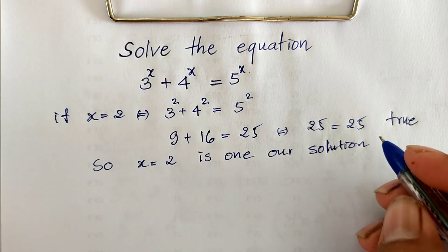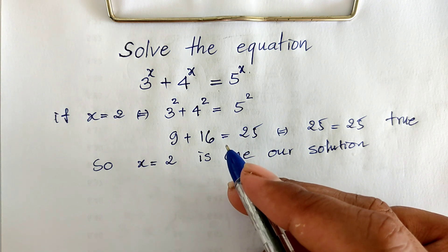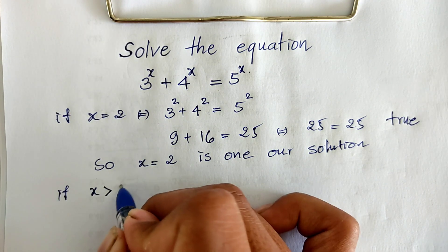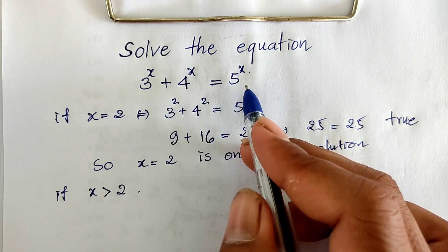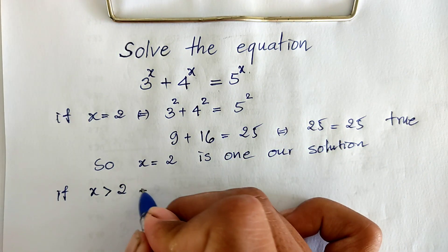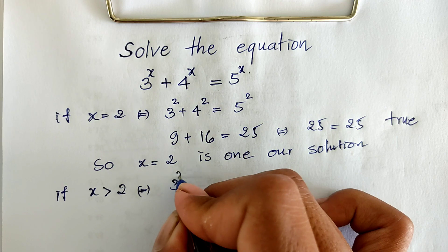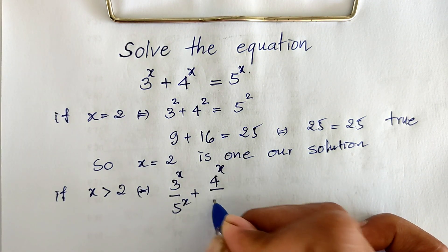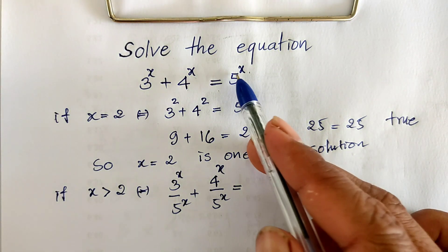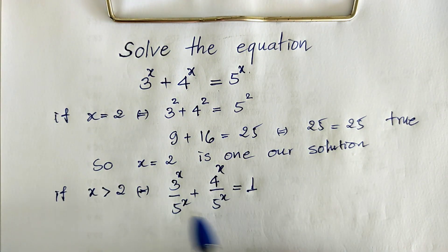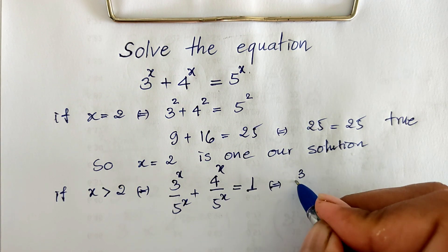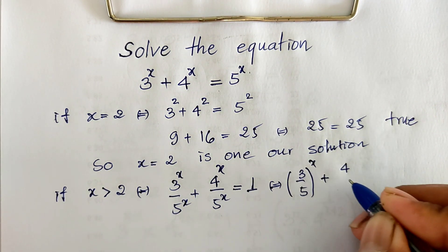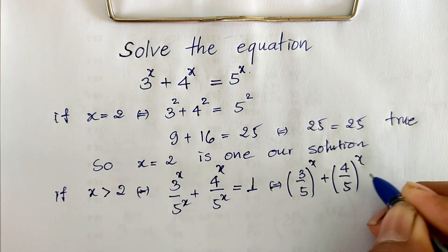Now I find the root of this equation. If h is bigger than 2, I divide both sides of this equation by 5 power h. So I get 3 power h divided by 5 power h, plus 4 power h divided by 5 power h, equals 5 power h divided by 5 power h, which equals 1.